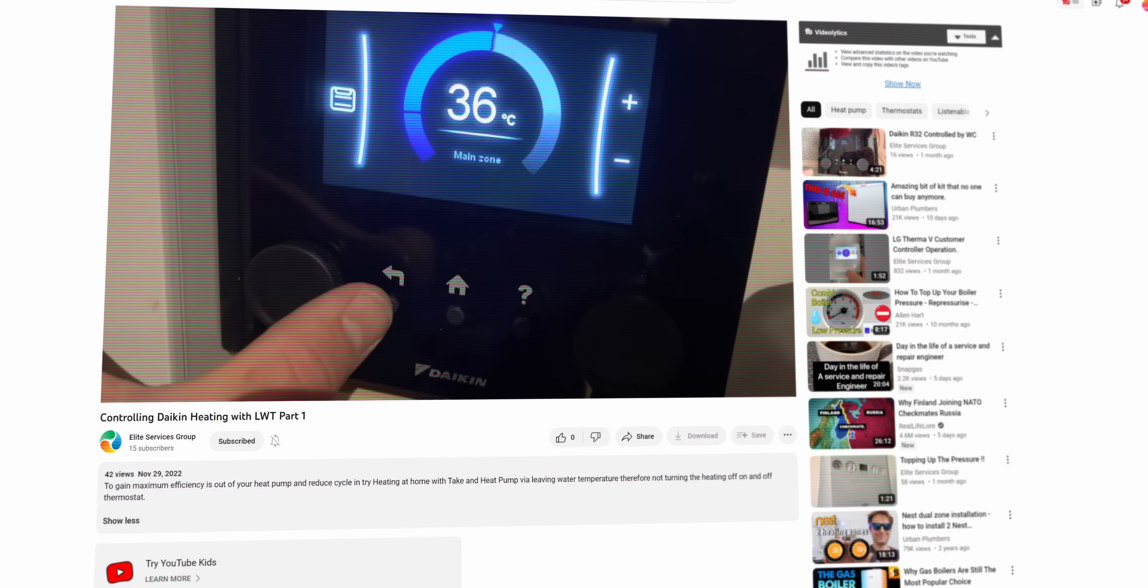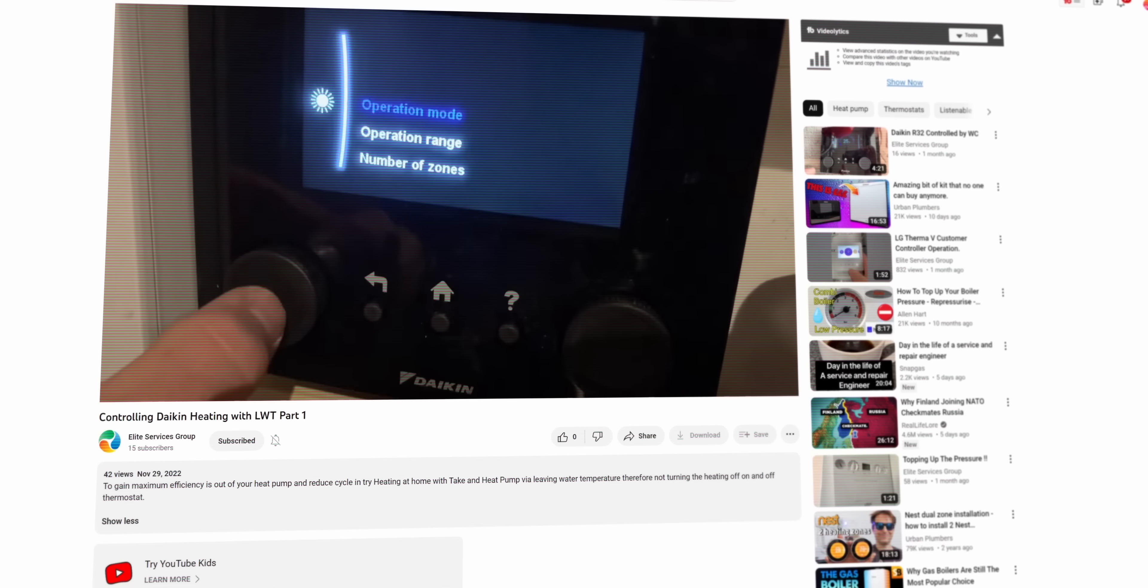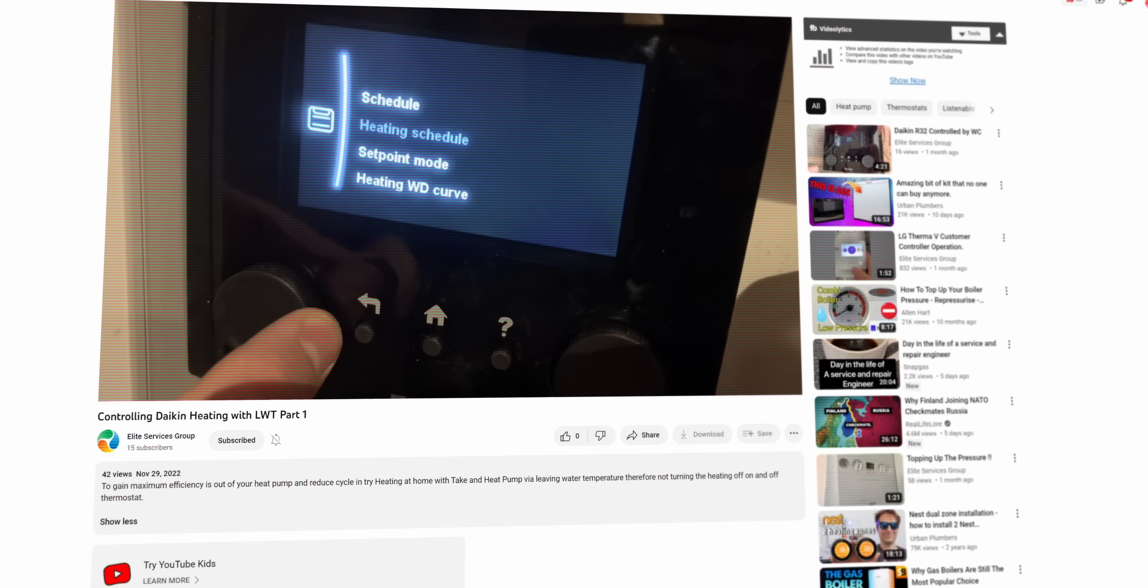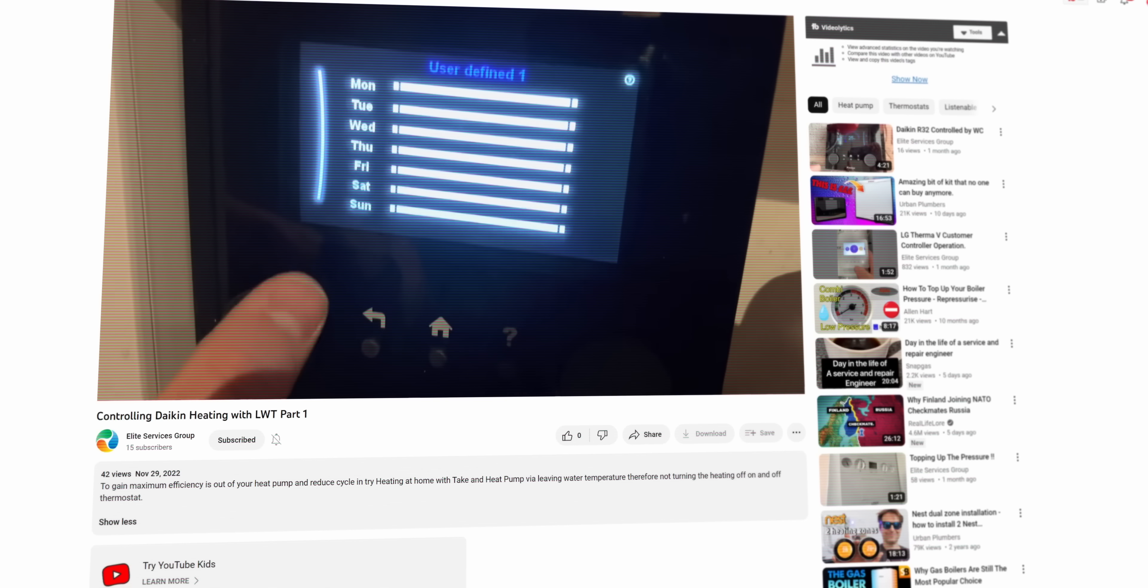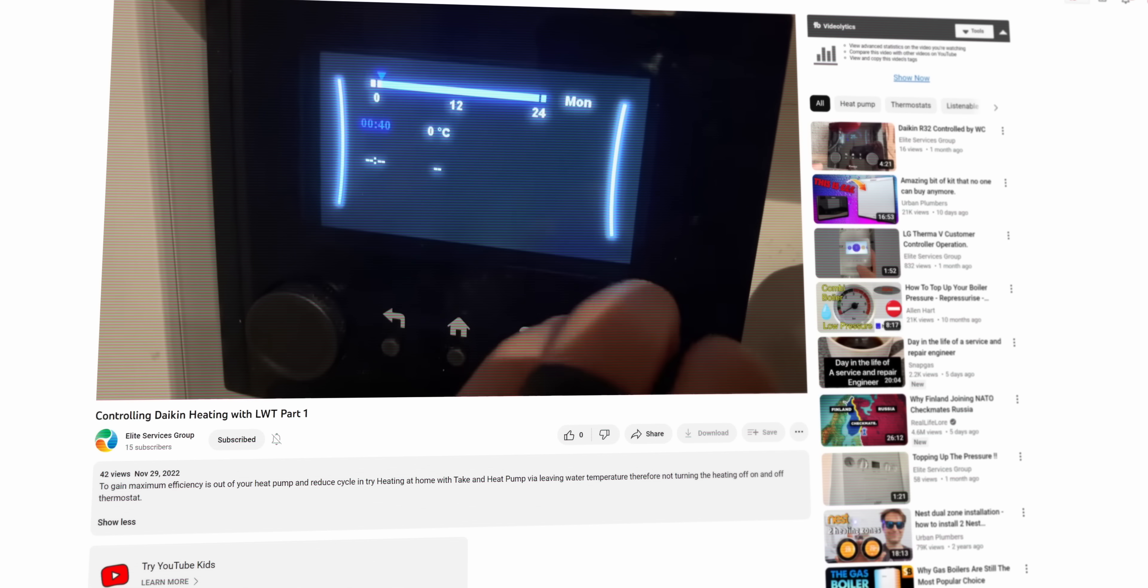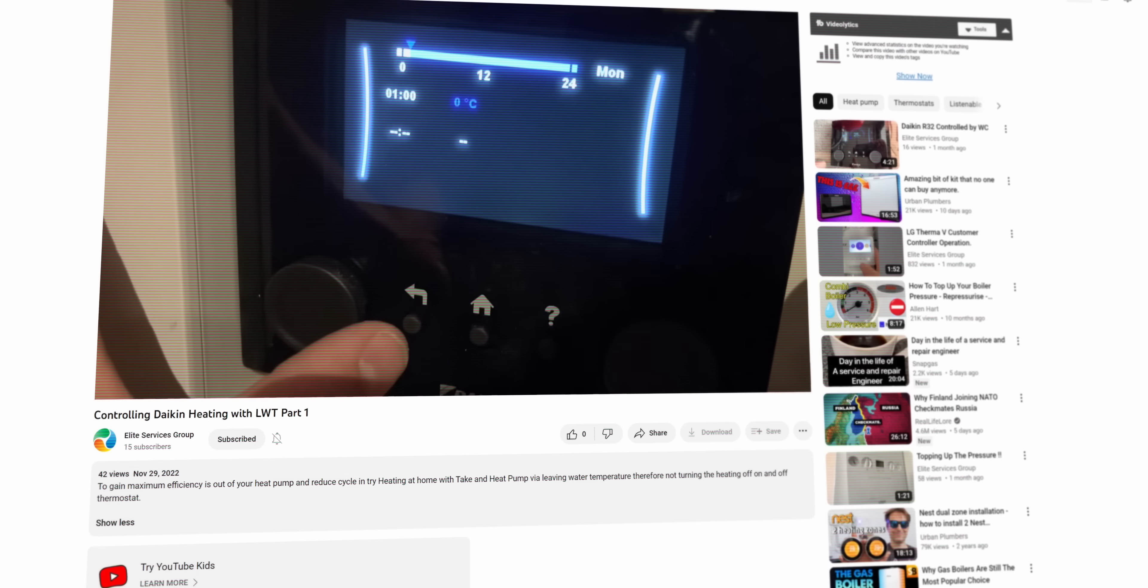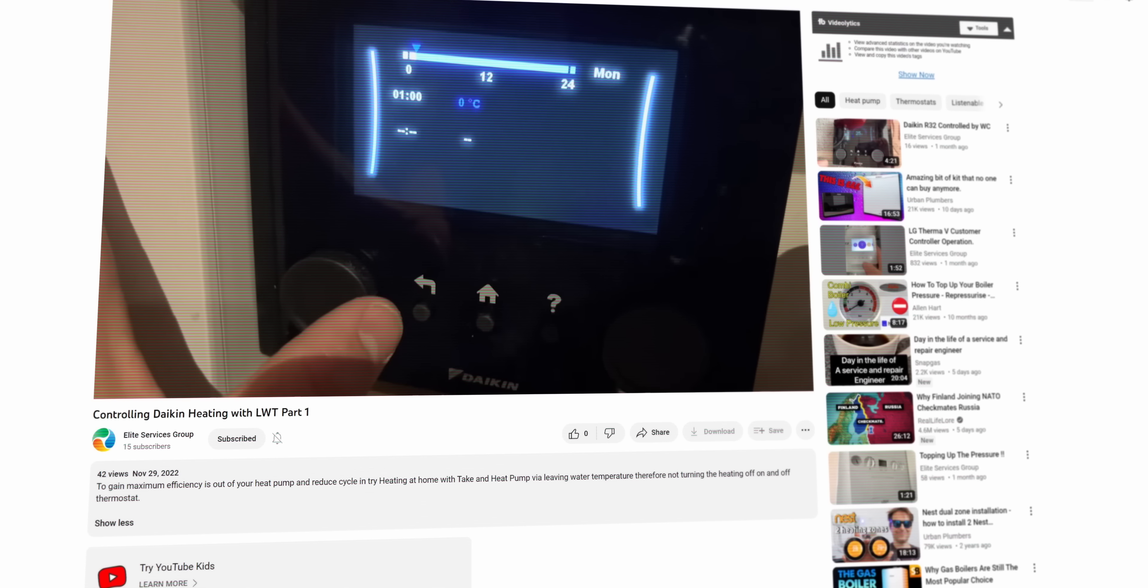If you find that you want to have lower flow temperatures during the night for a cooler temperature during the night, you can add a schedule. If you go to main zone schedule, you can add a schedule that will bring up the heating schedule. Then you can edit that and state what time and what plus or minus flow temperature you want. So during the day it might be zero, during the night it might be minus three or four, and that will lower it maybe down to 18-19 degrees during the night.